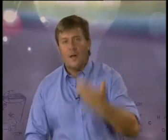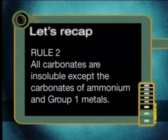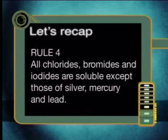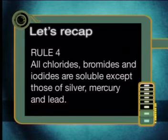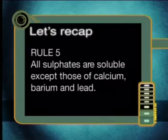Now let's recap on all our solubility rules. These are important so you must learn them. Rule number 1: all nitrates are soluble. Rule number 2: all carbonates are insoluble except carbonates of group 1 metals and ammonium. Rule number 3: all group 1 metals and ammonium salts are soluble. Rule 4: all chlorides, bromides and iodides are soluble except those of silver, mercury and lead. And rule number 5: all sulfates are soluble except those of calcium, barium and lead.